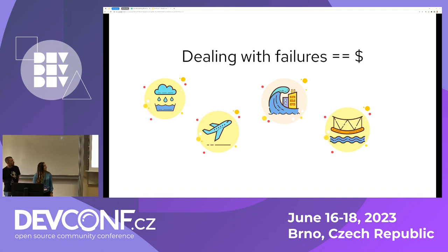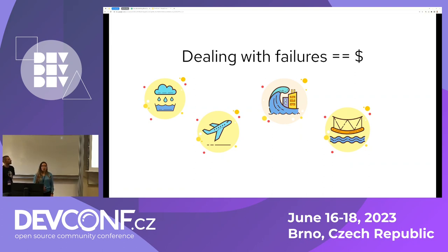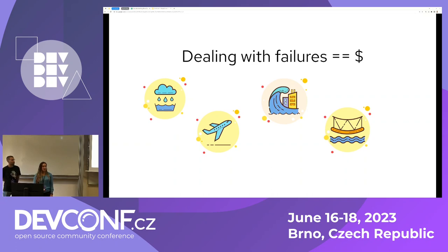Here are some examples of real-life failures. Imagine having to deal with a water leak on a Monday morning when you need to go to work, or an airplane engine failure during a flight. Another example is a tsunami or earthquake in a highly populated area. And there's the example of a bridge collapse because there were too many cars or it was unmaintained.